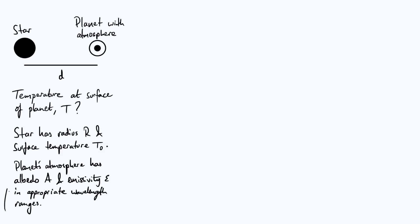I've noted 'in appropriate wavelength ranges' because in a simplified model there are essentially two different wavelengths of electromagnetic radiation that matter. The incoming radiation from a sun-like star peaks around the visible light part of the EM spectrum, while the planet and its atmosphere are much cooler and emit much longer wavelength radiation — more in the infrared. Since albedo and emissivity are wavelength-dependent, we care about the albedo in the visible and the emissivity specifically in the infrared.